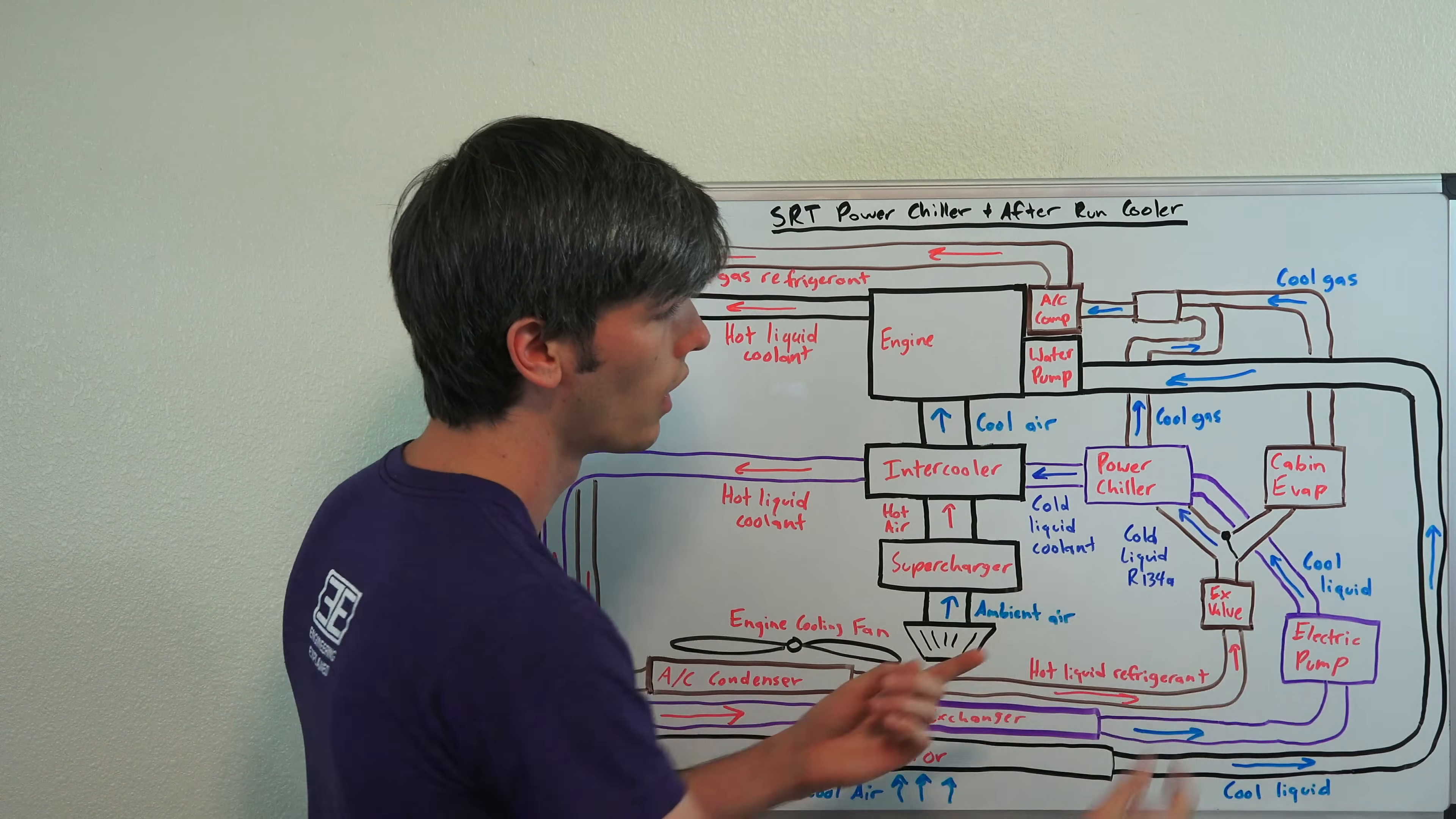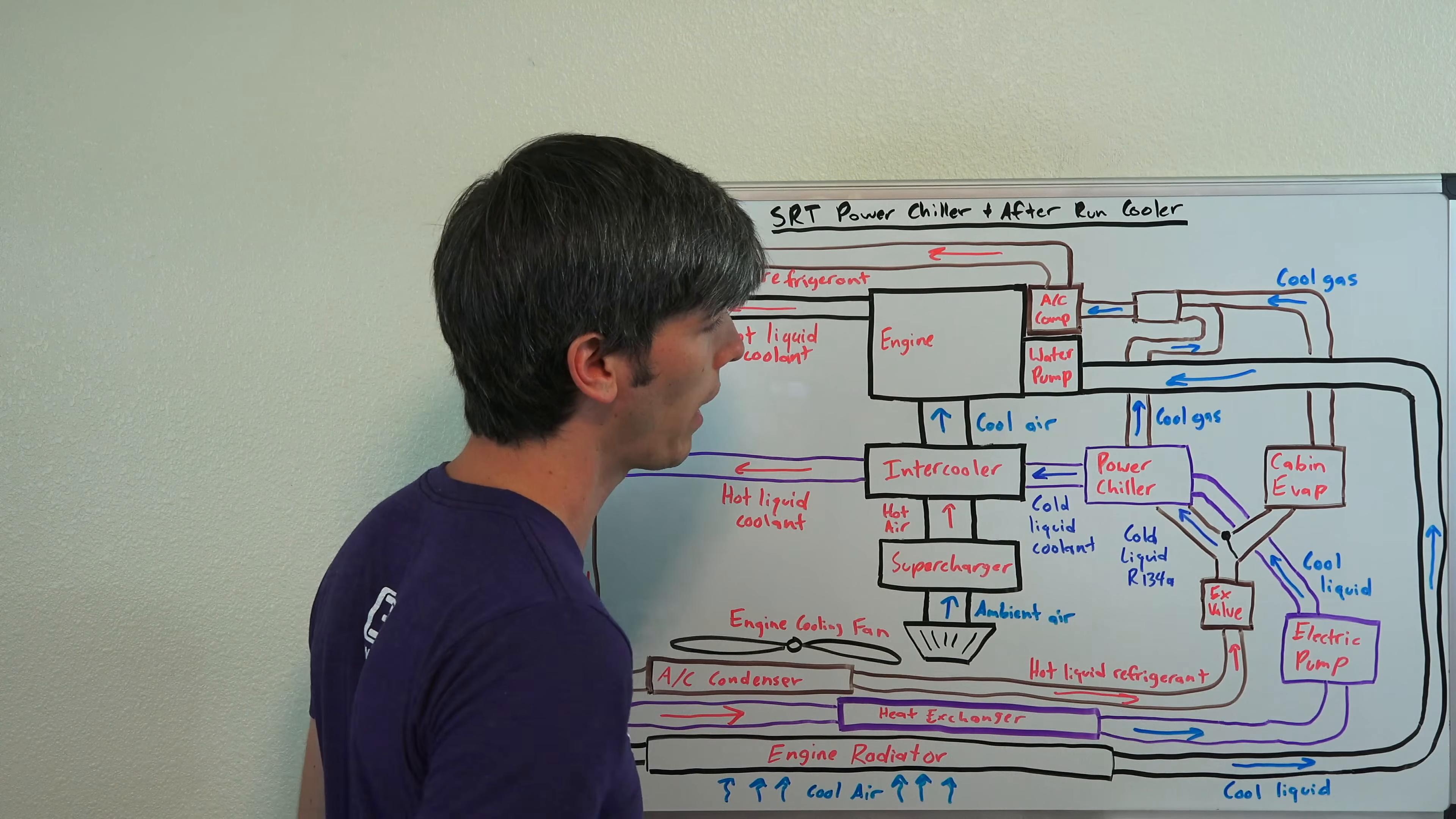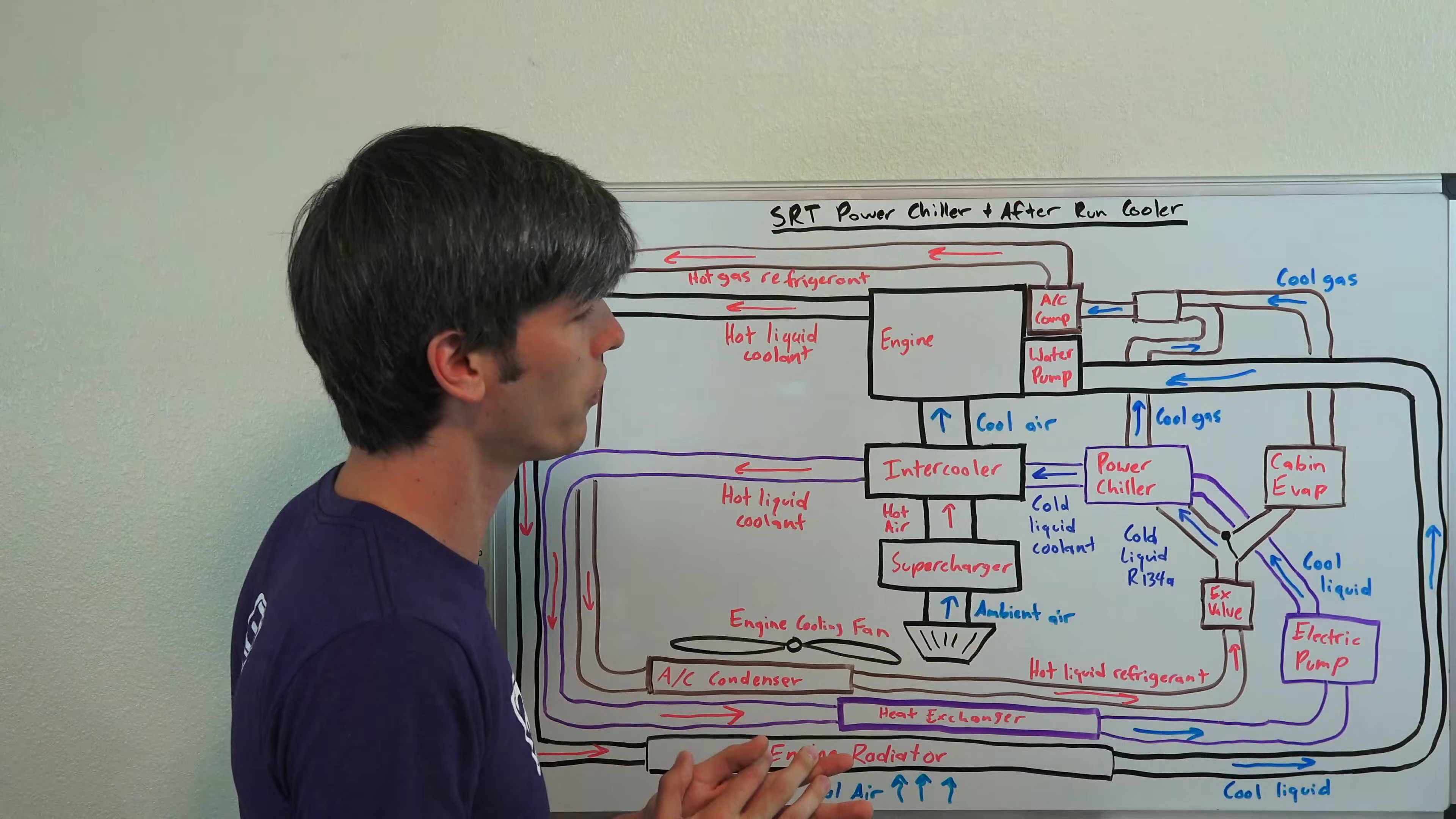but basically you can send it through the cabin evaporator if you want to cool the passengers off, or you can send that refrigerant that's been chilled through your power chiller to cool off the air going into the engine. Now it's one or the other, so you're not going to be turning on your AC while you're running down the drag strip and getting the benefit of that, which is fine.